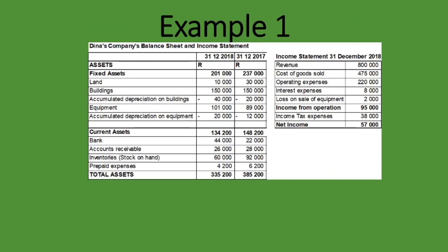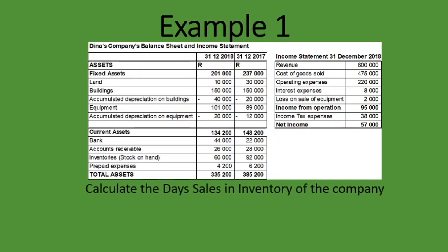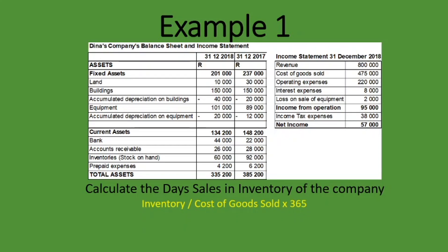Let's look at an example using a statement of financial position and an income statement — the same ones used to calculate the inventory turnover ratio. We're asked to calculate the day sales in inventory. The formula is inventory divided by cost of goods sold, times 365. Looking at the balance sheet, we have data for 2017 and 2018; taking this year's inventory from current assets gives us 60,000 rand.